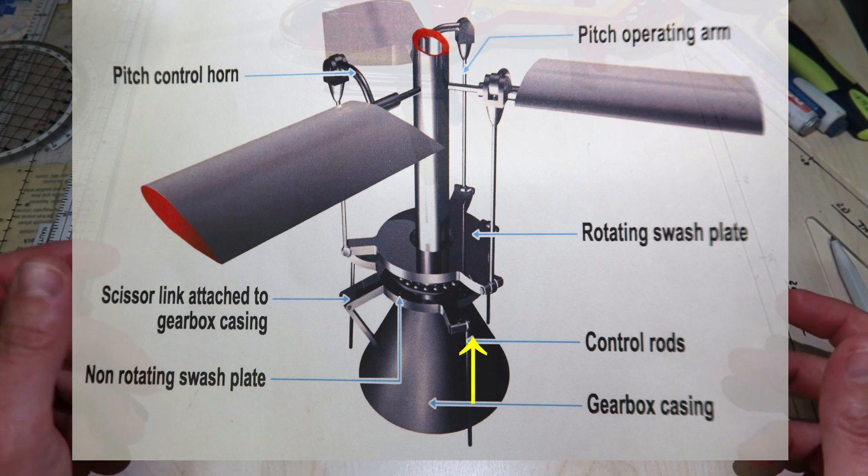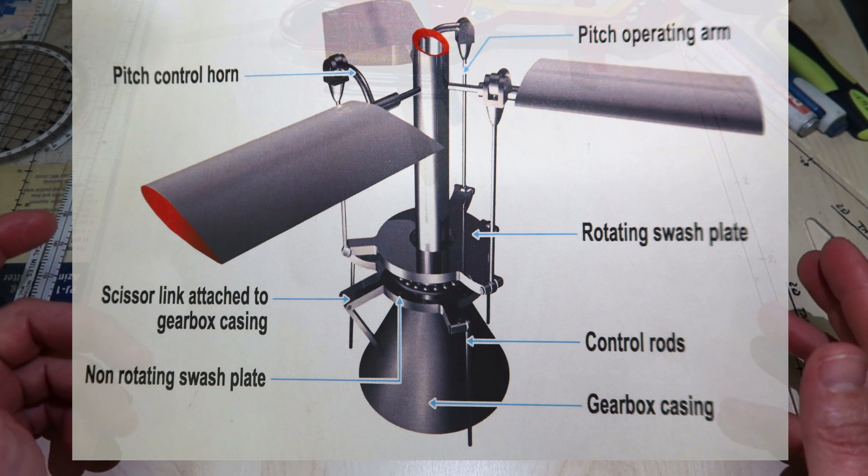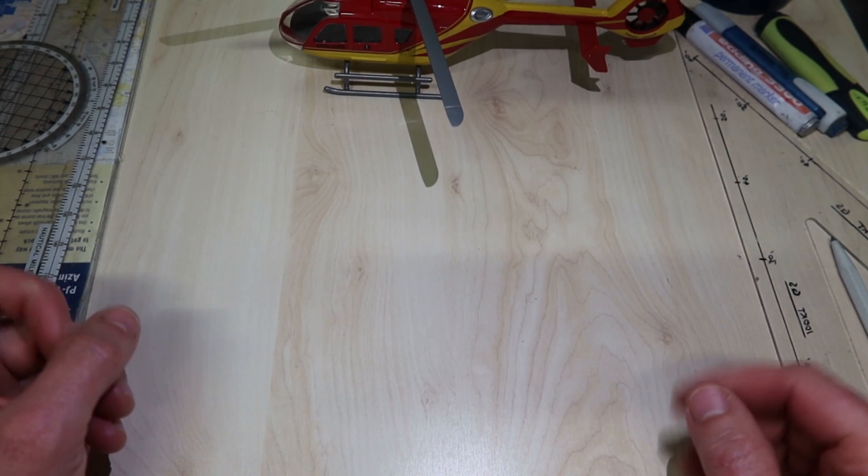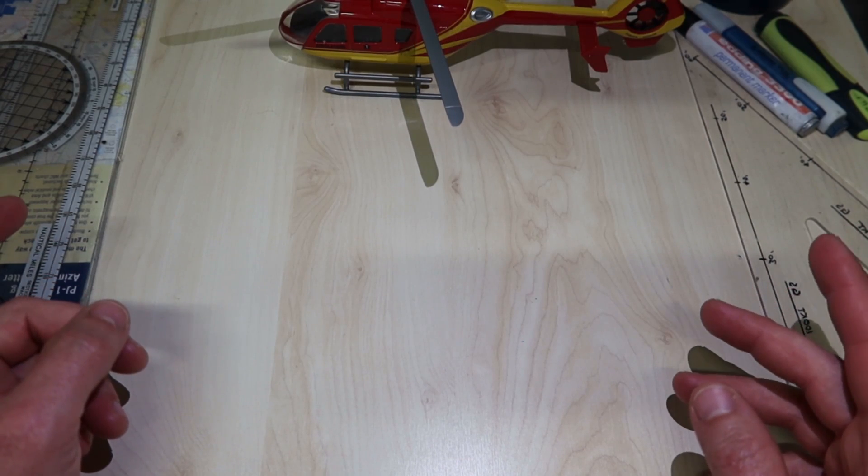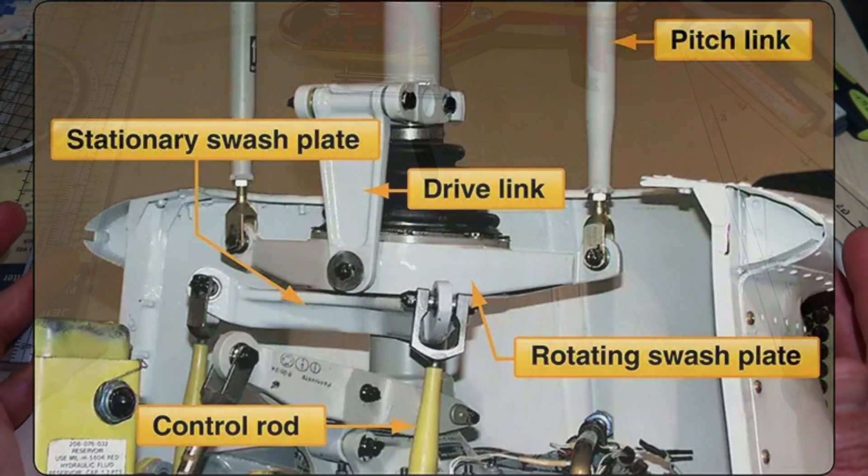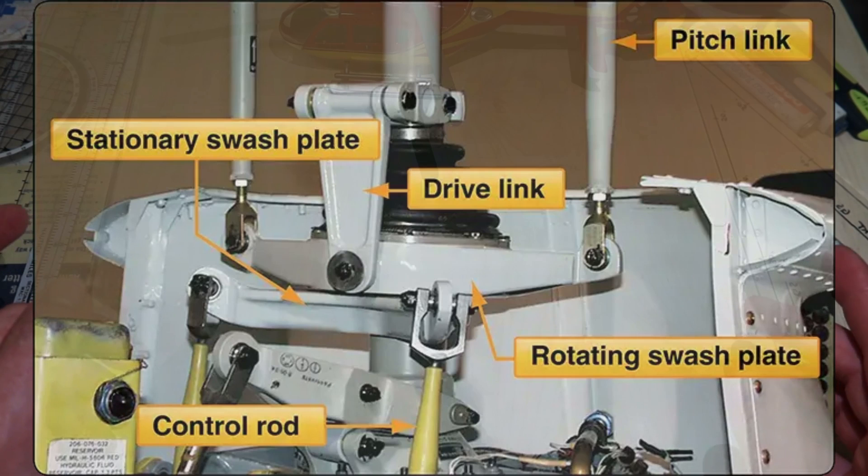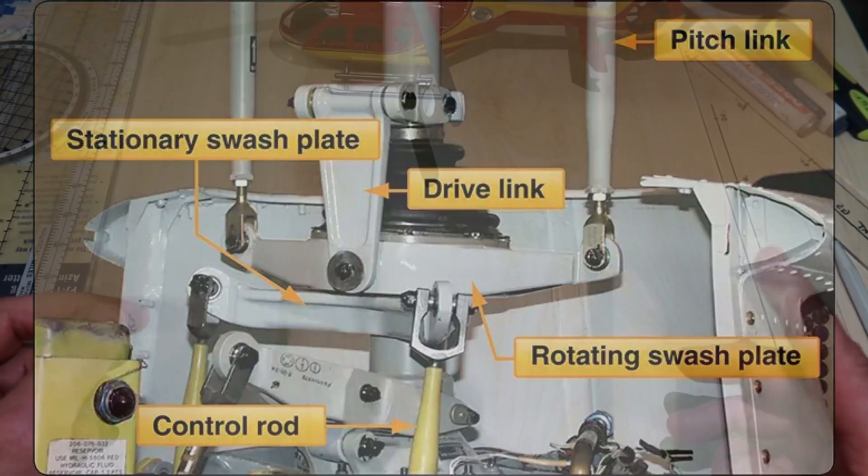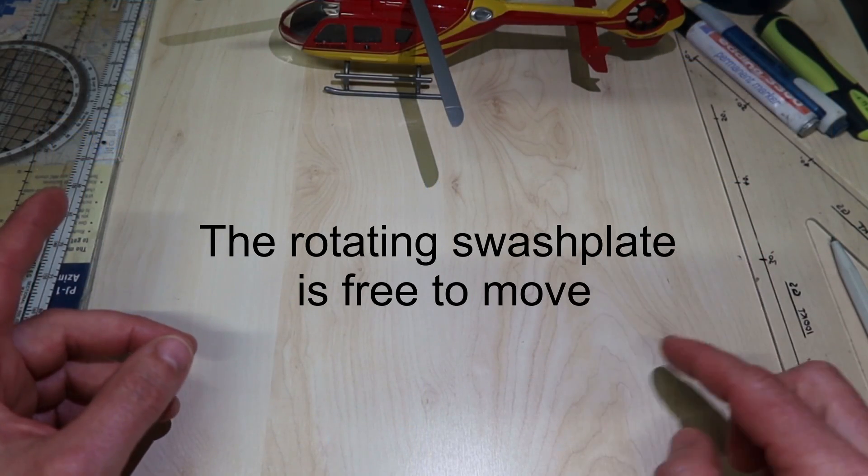The rotating swash plate, sometimes called a rotating star, is mounted face to face with the non-rotating swash plate. A bearing between the two reduces the friction. As the name implies, the rotating swash plate rotates with the rotor head. Although held against the non-rotating swash plate, the rotating swash plate is free to move.